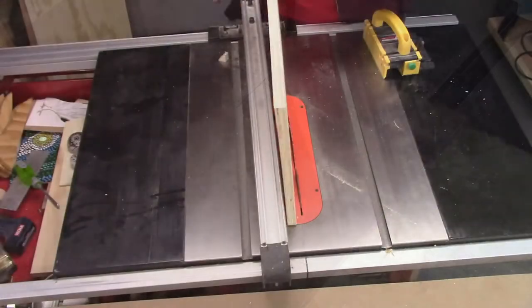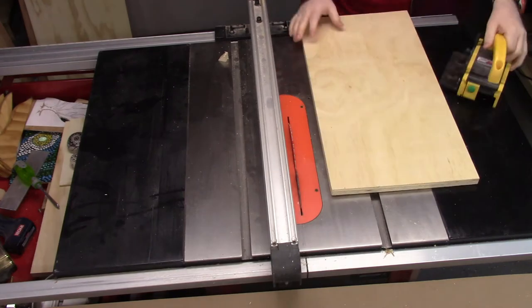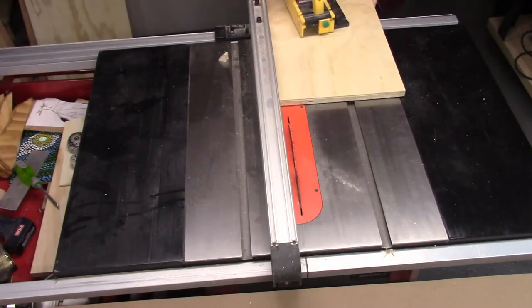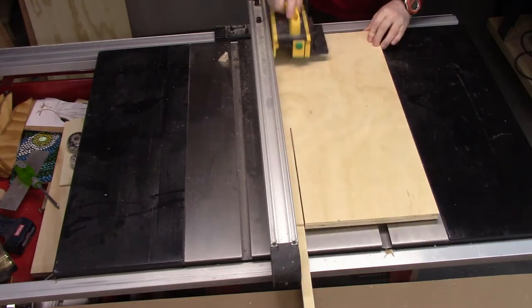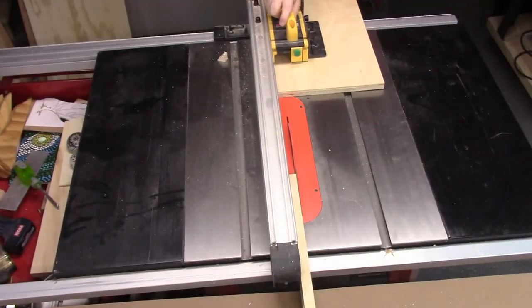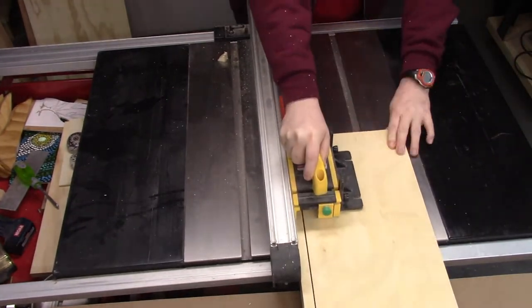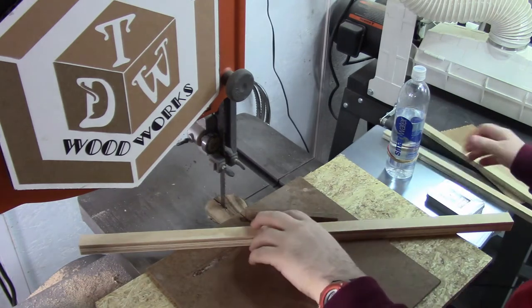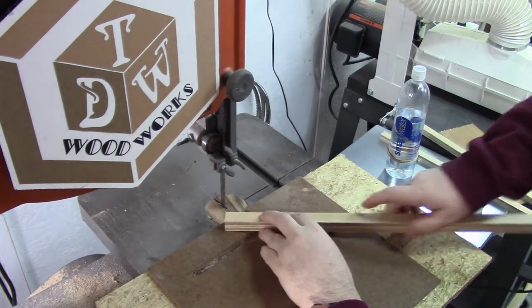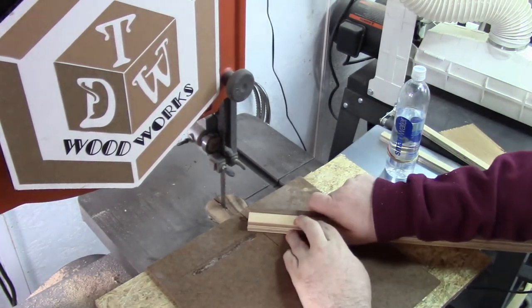Alright so I got some cabinet grade plywood, three quarter inch, and I just butted it up against the blade so that I can cut these perfectly square. Again I can redo these in hardwood or pine, this is what I had laying around. Basically this is just going to be a kind of proof of concept, just a little prototype of sorts.